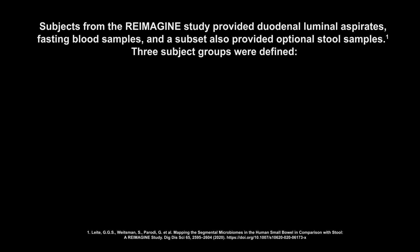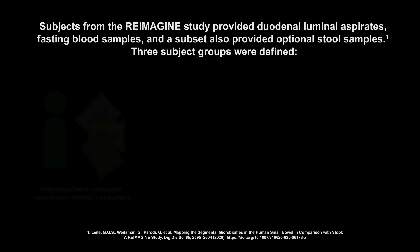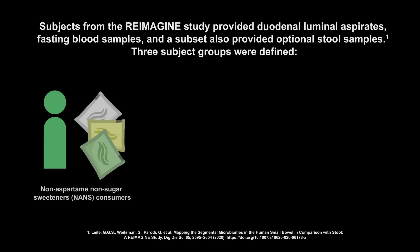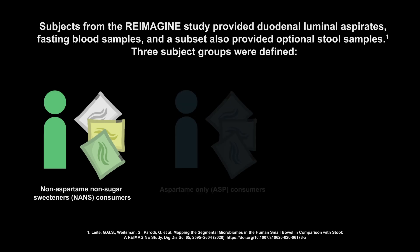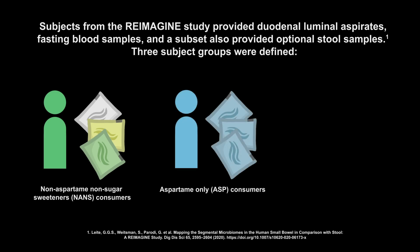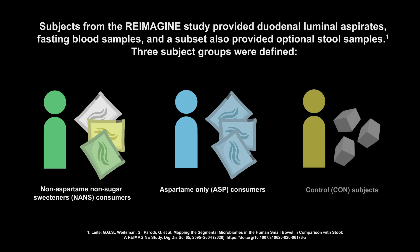Subjects from the reimagined study provided duodenal luminal aspirates, fasting blood samples, and a subset also provided optional stool samples. Three subject groups were defined: non-aspartame non-sugar sweetener consumers (NANCE), aspartame-only consumers (ASP), and controls.